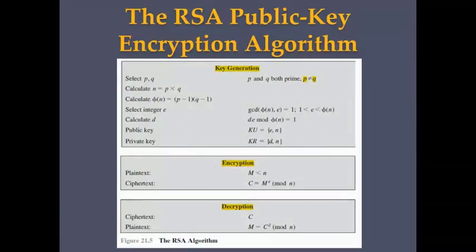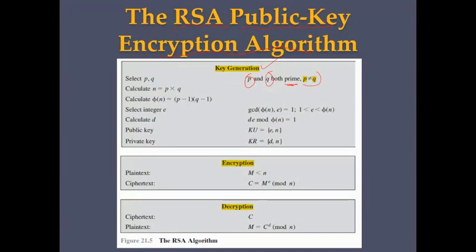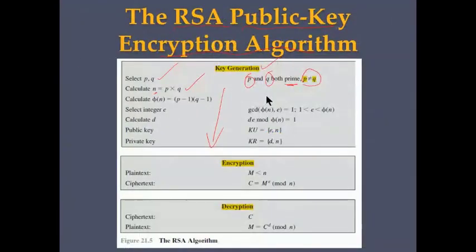The next type is the RSA public-key encryption algorithm. Key generation involves two prime numbers p and q that are not equal. We select p and q, calculate n = p × q, and proceed through additional steps. The three main steps are: key generation, encryption, and decryption.